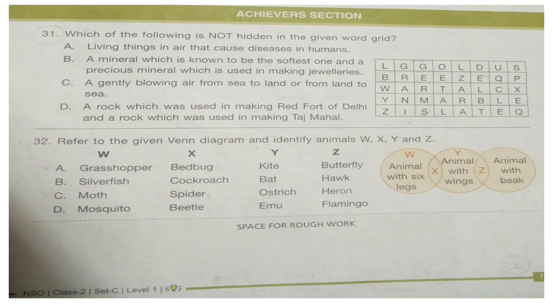A. Living things in air that cause diseases in humans. B. A mineral which is known to be the softest one and a precious mineral which is used in making jewellery. C. A gently blowing air from sea to land or from land to sea. D. A rock which was used to make Red Fort of Delhi and a rock which was used in making Taj Mahal.